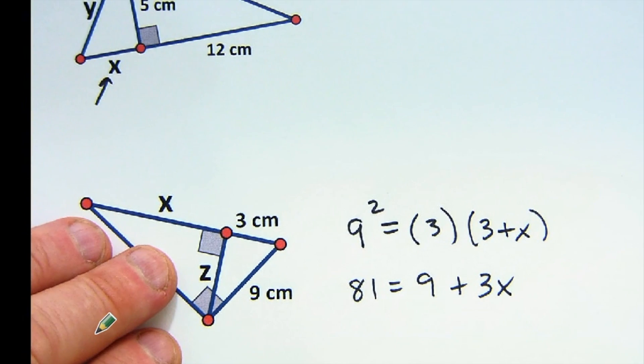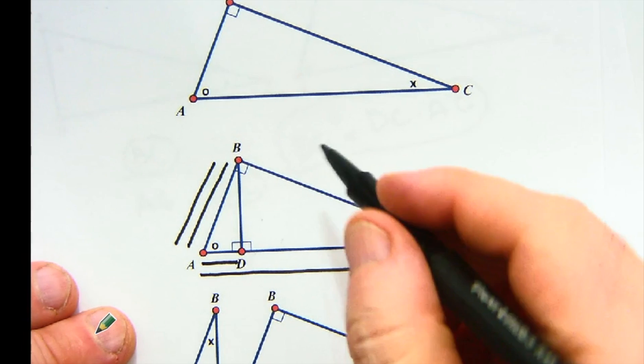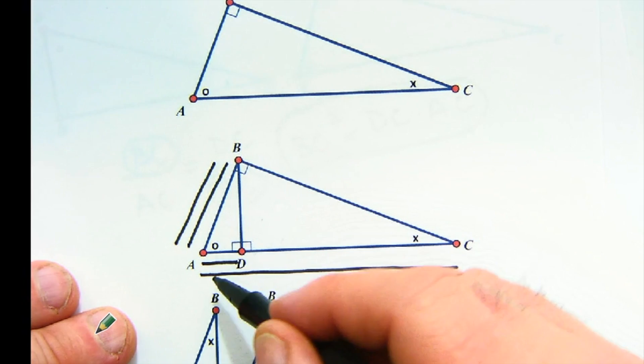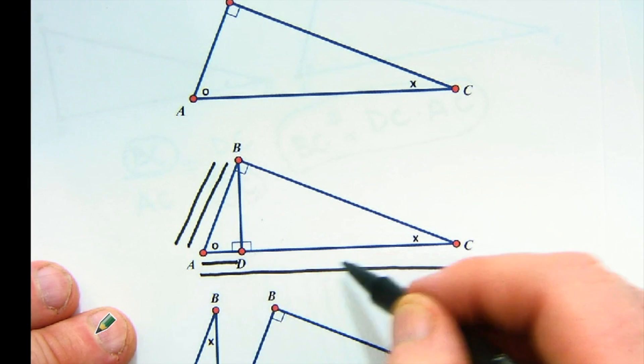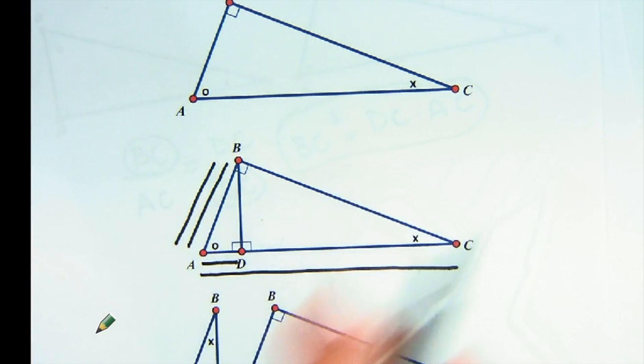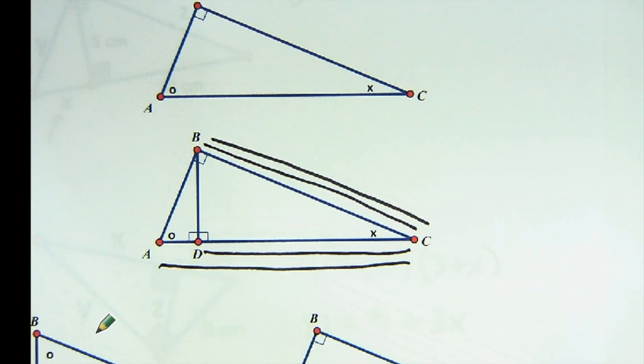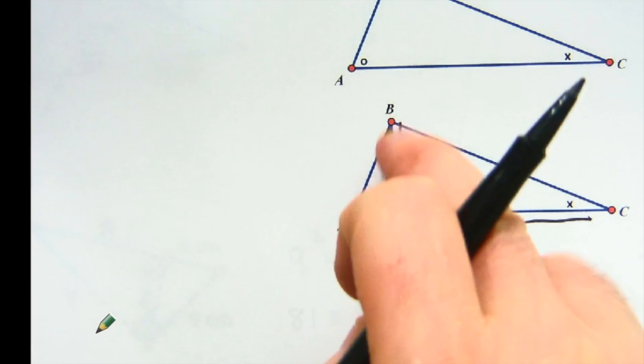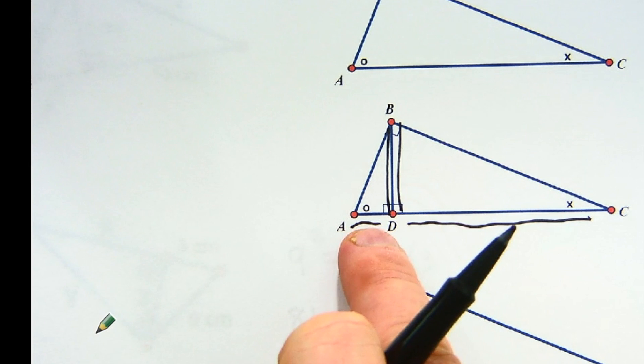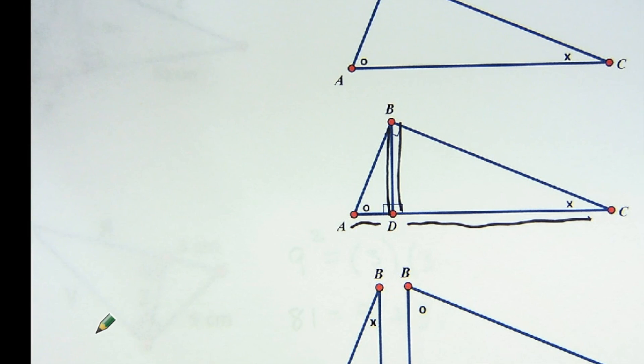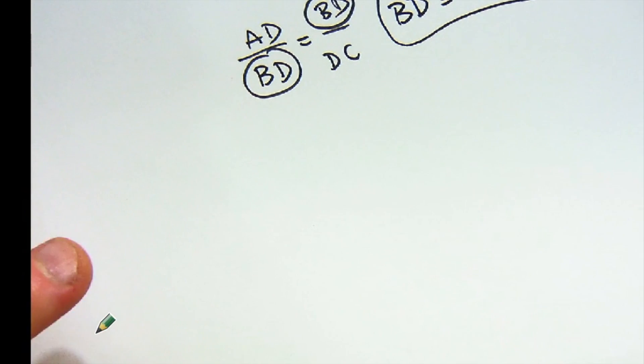So just remember that there are three geometric means. Let's see if I can go back to the original diagram. One geometric mean is this side squared equals its piece times the whole. The other is on the opposite side over here. It's this side squared equals its piece times the whole. And then the final one, a unique environment, is the altitude squared is equal to the multiplication of its two pieces. Good luck with geometric mean.